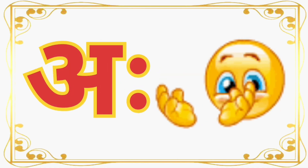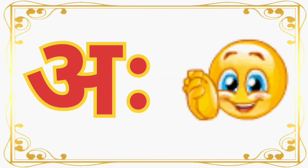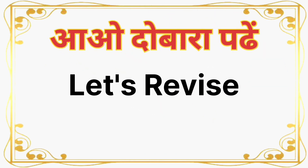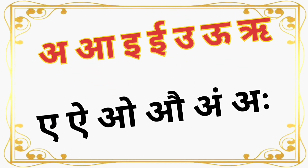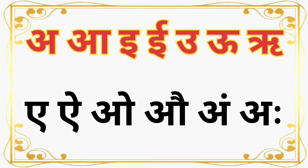आहा! बच्चो, बजाओ ताली! आओ दुबारा पढ़ें: छोटा आ, बड़ा आ, छोटी इ, बड़ी इ, छोटा उ, बड़ा उ, ऋ, ए, ऐ, ओ, औ, अं।